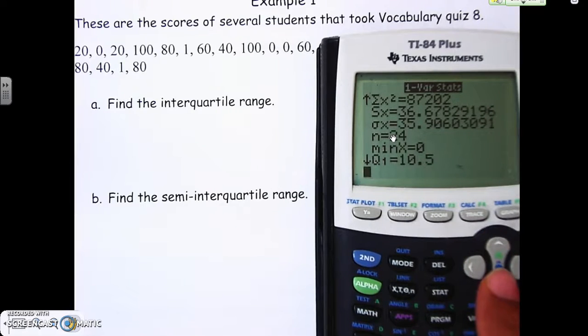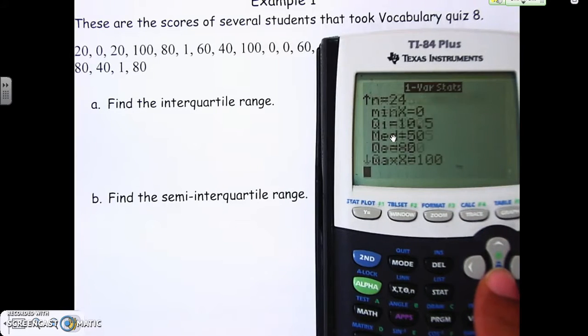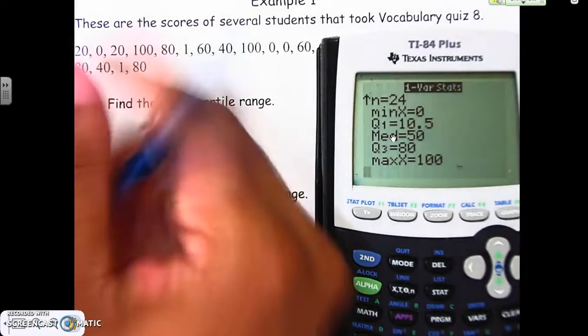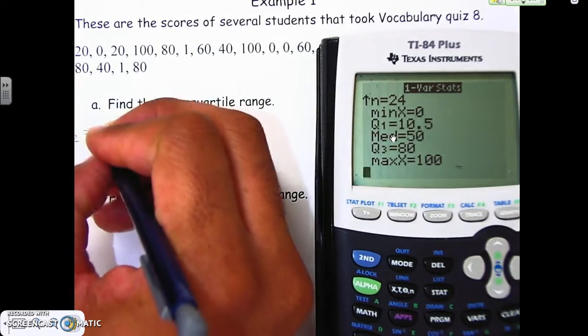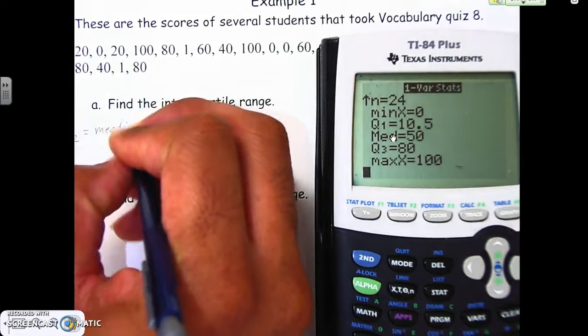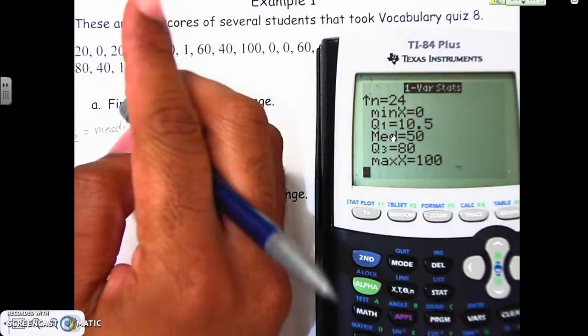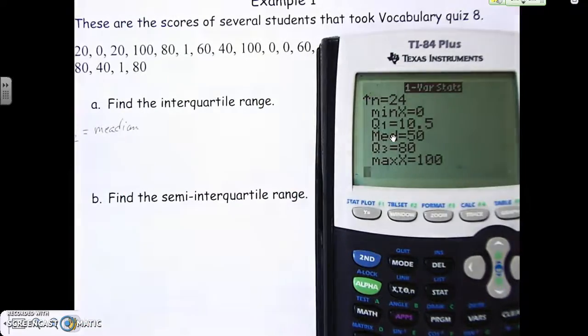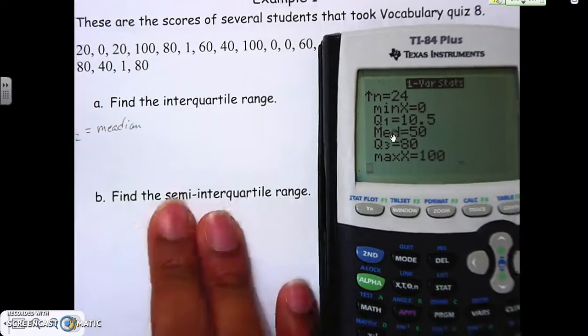We're going to go down to all these parts. We have the minimum, we have Q1, median, Q3, and max. Q2 is the median.